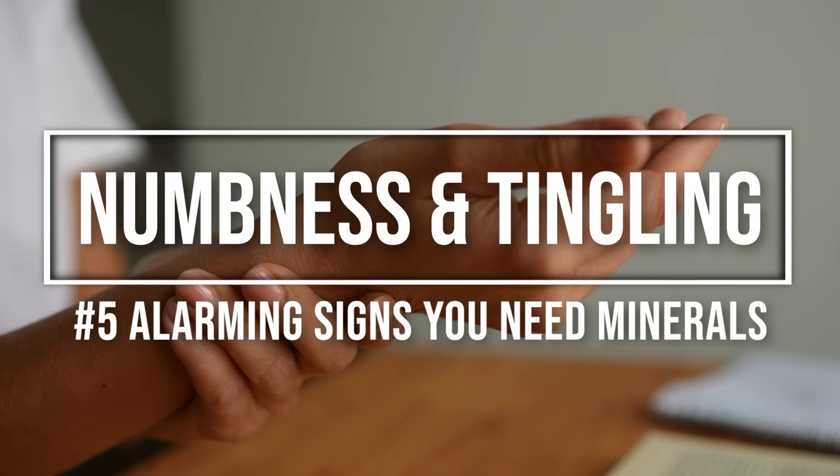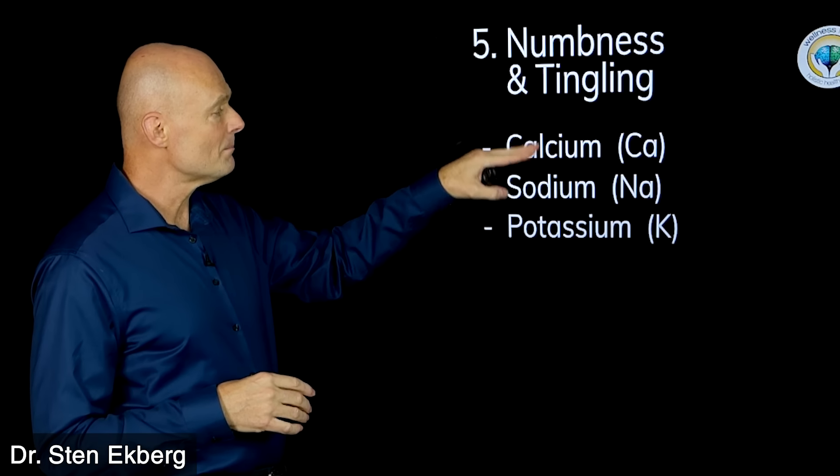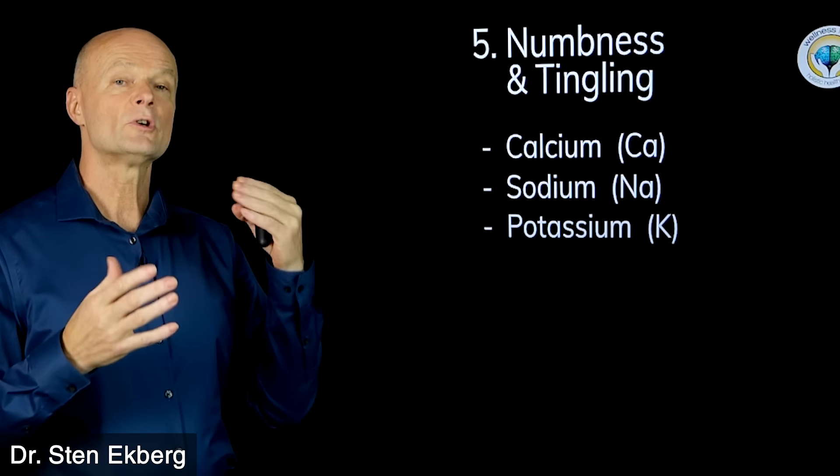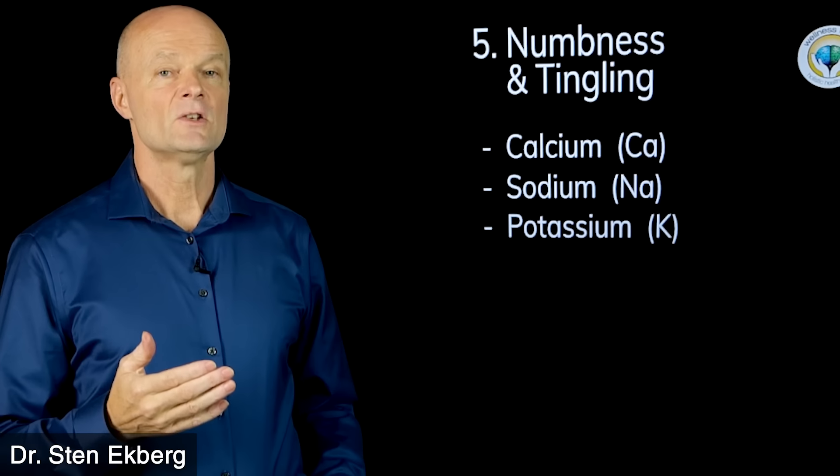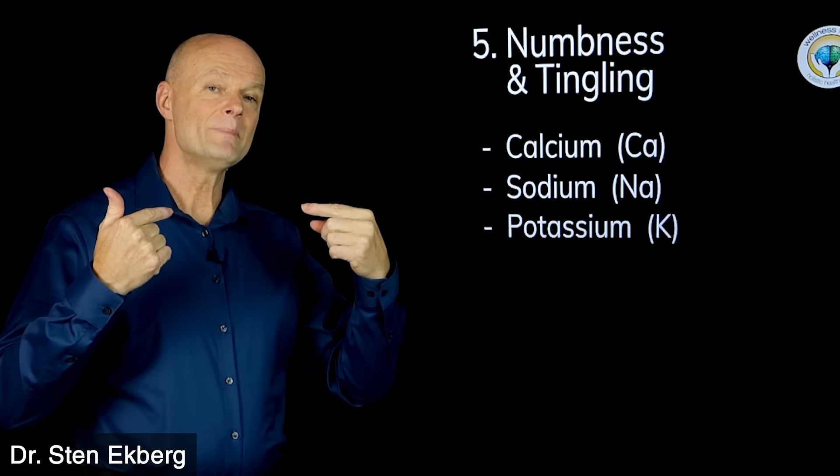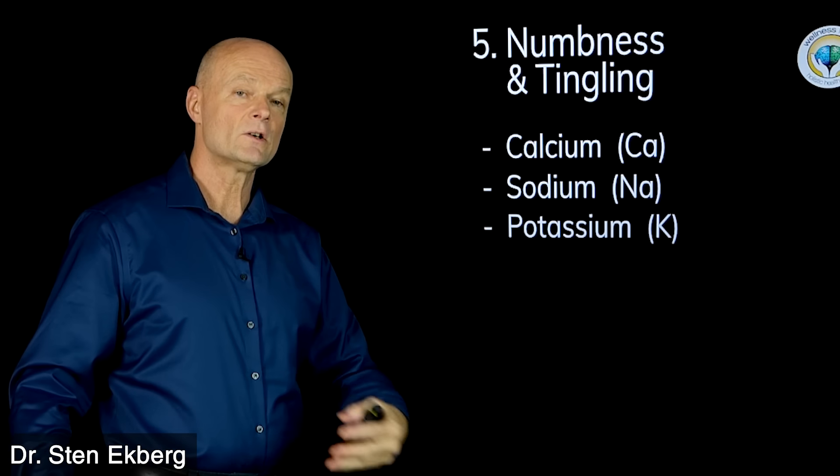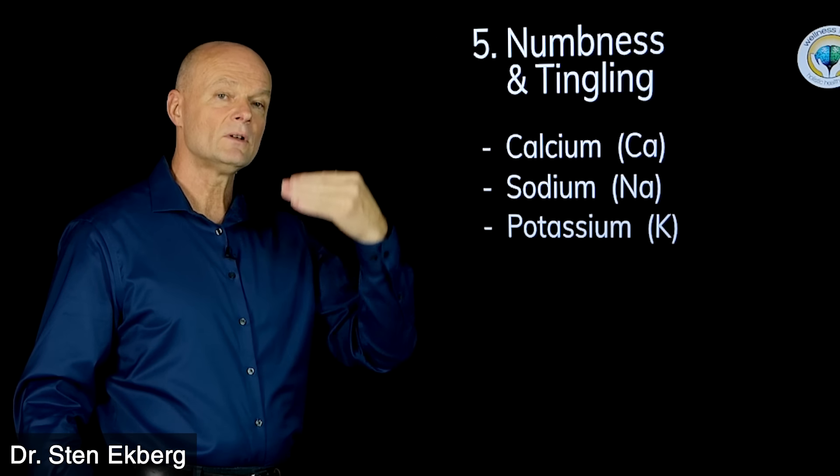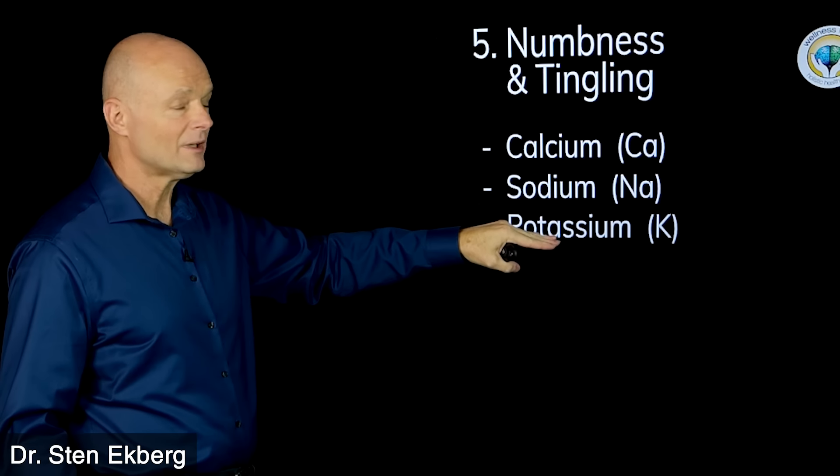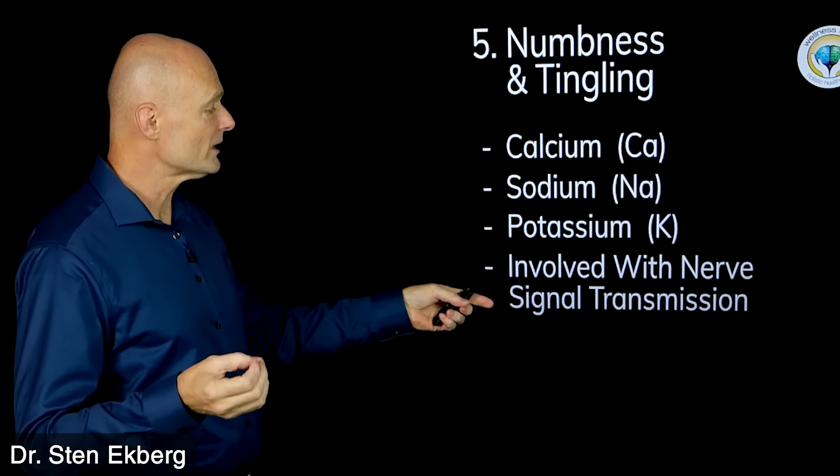Number five is numbness and tingling. Here we have the three big ones: calcium, sodium, and potassium, because these are the main ones that we use for muscle contraction but also for nerve signals. As you have numbness and tingling, what that means is the signal transmission from your peripheral nerves—if your foot is talking to your brain, it needs to travel along a nerve path. If we don't have the proper electrolytes, then that signal could get distorted along the way.